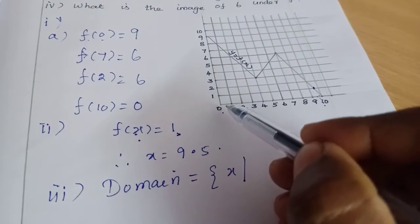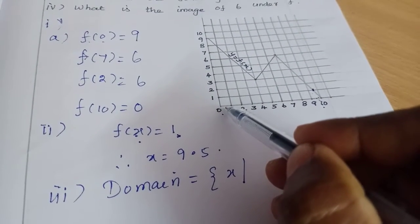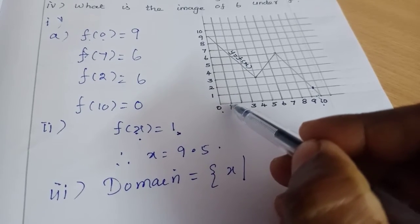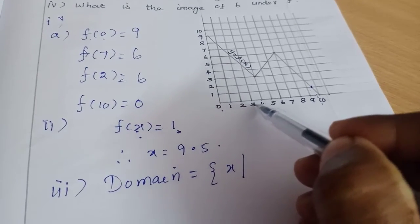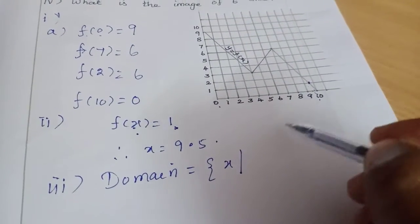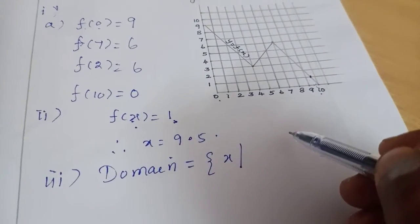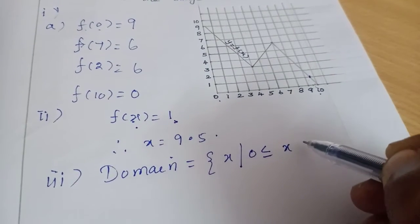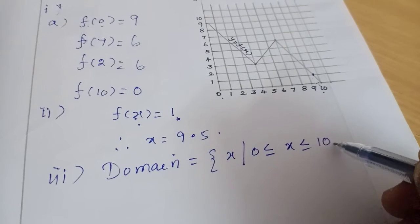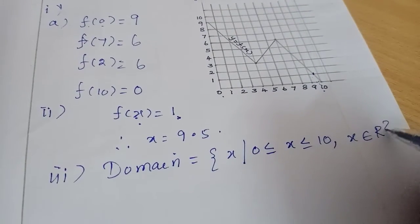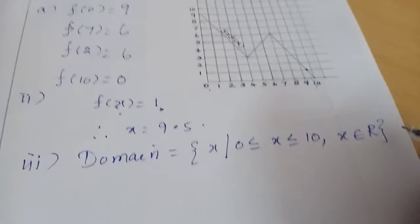Or many terminating decimal numbers are there. So this is general - real numbers are mentioned. So 0 less than or equal to x less than or equal to 10, where the x values belong to real numbers. Range is equal to set of y such that 0 less than or equal to y less than or equal to 9, where y belongs to real numbers.